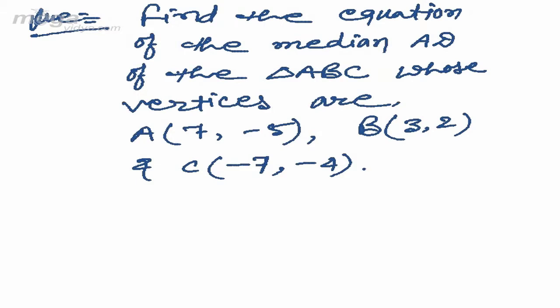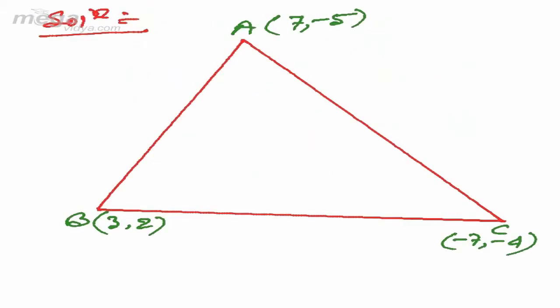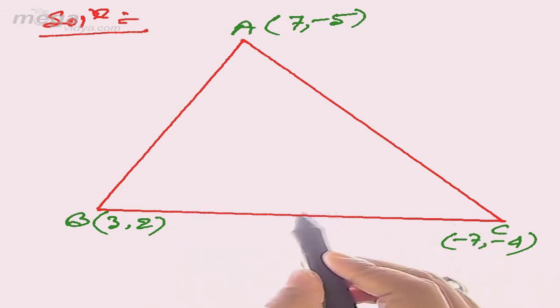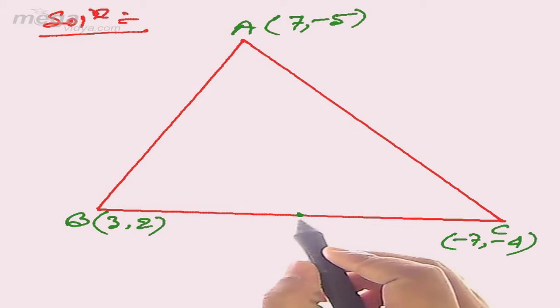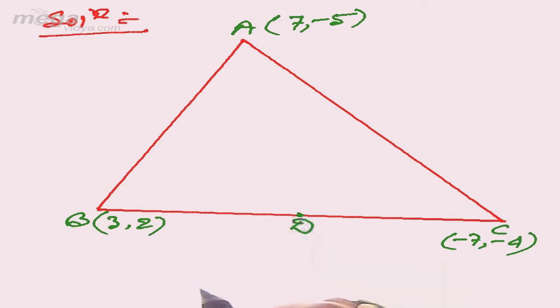First, we will draw the triangle ABC with vertices (7, -5), (3, 2), and (-7, -4). We have to find the equation of the median AD, where D lies on BC. Since AD is the median, it will bisect the opposite side BC, so BD should be equal to DC.